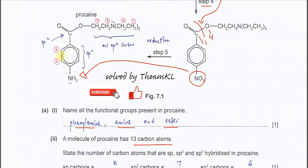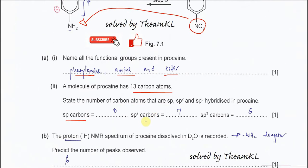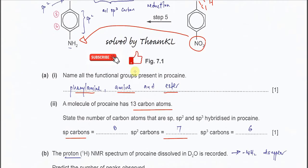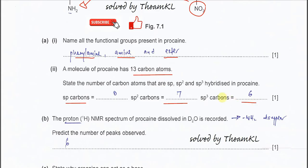Counting the benzene ring: one, two, three, four, five, six — six carbons are sp2. The carbonyl carbon is also sp2 hybridized. So the total is six plus one equals seven sp2 carbons. For sp3 carbons: there are two sets of two carbons (times two, so four), plus one, plus one — total six carbons with sp3 hybridization, meaning four sigma bonds each.